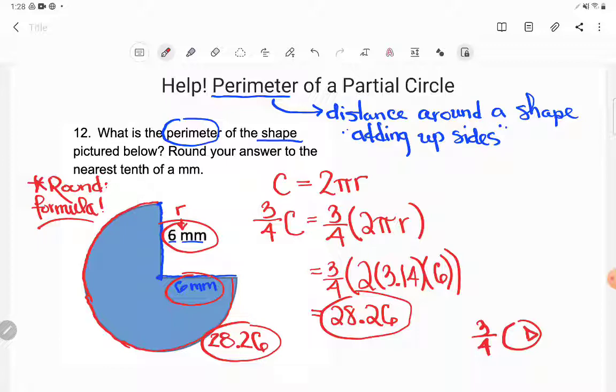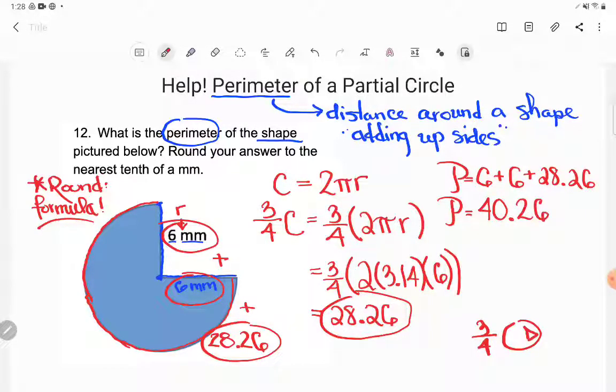So I need that round piece, that 28.26, yes, but I also need this blue piece that was six millimeters and this blue piece that was six millimeters. If I want to find the total there, I'm gonna need to add all those up. So for that total perimeter, I'm gonna add all the sides: the six millimeter side, the other six millimeter side, and then that 28.26 side. And I get 6 + 6 + 28.26 = 40.26.